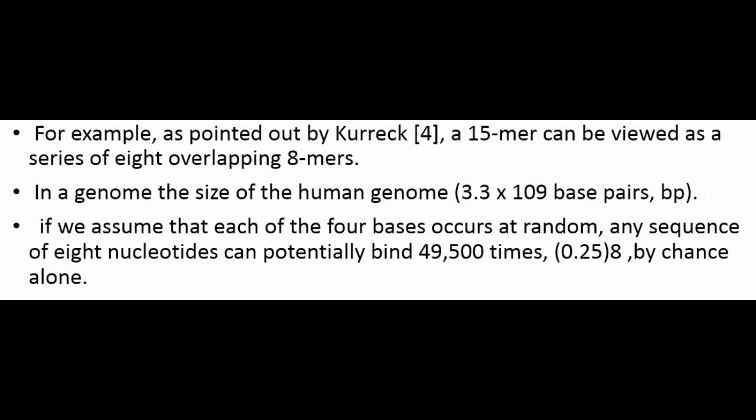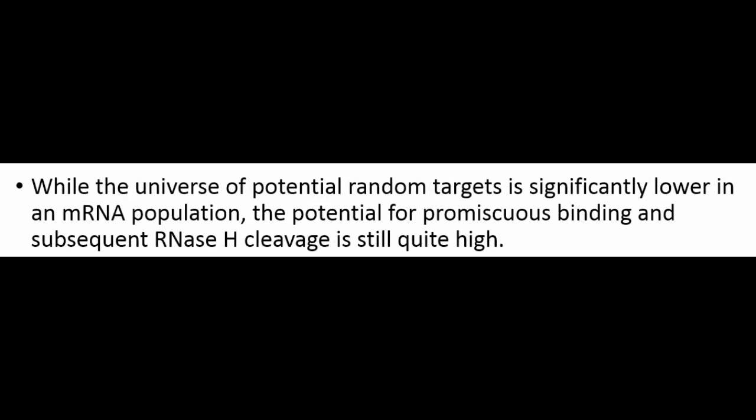In a genome the size of the human genome (3×10^9), if we assume that each of the four bases occurs at random, any sequence of 8 nucleotides can potentially bind 49,500 times (8^4 × 0.25) by chance alone. While the universe of potential random targets is significantly lower in an mRNA population, the potential for promiscuous binding and subsequent RNase H cleavage is still quite high.